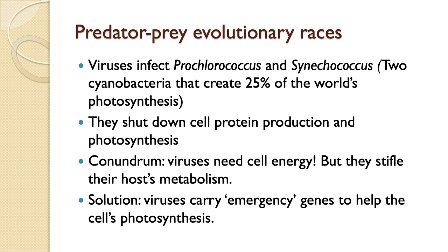Prochlorococcus makes up an enormous number of cells in ocean ecosystems. They're highly photosynthetic and produce a lot of the oxygen in the ocean and in our atmosphere.